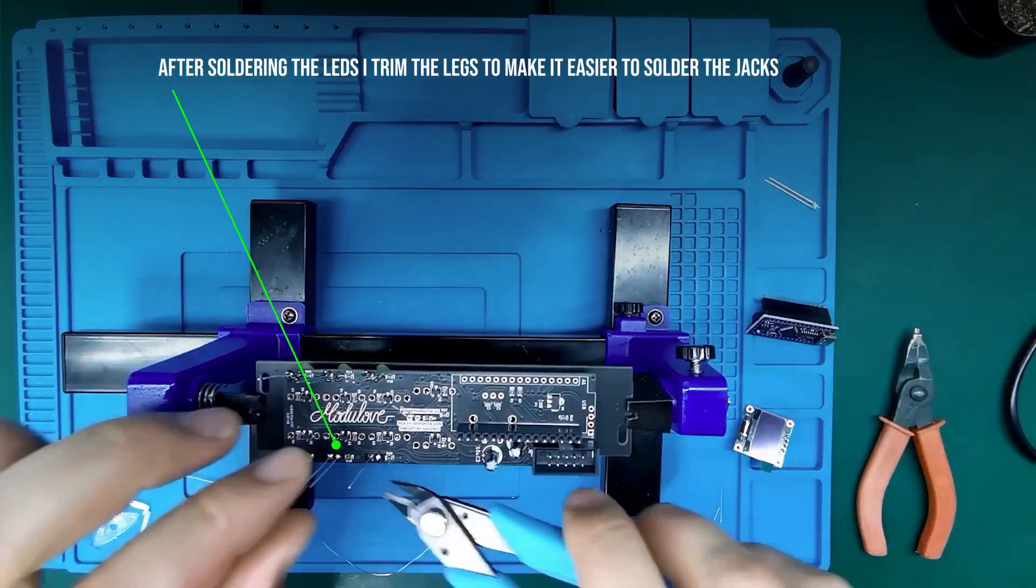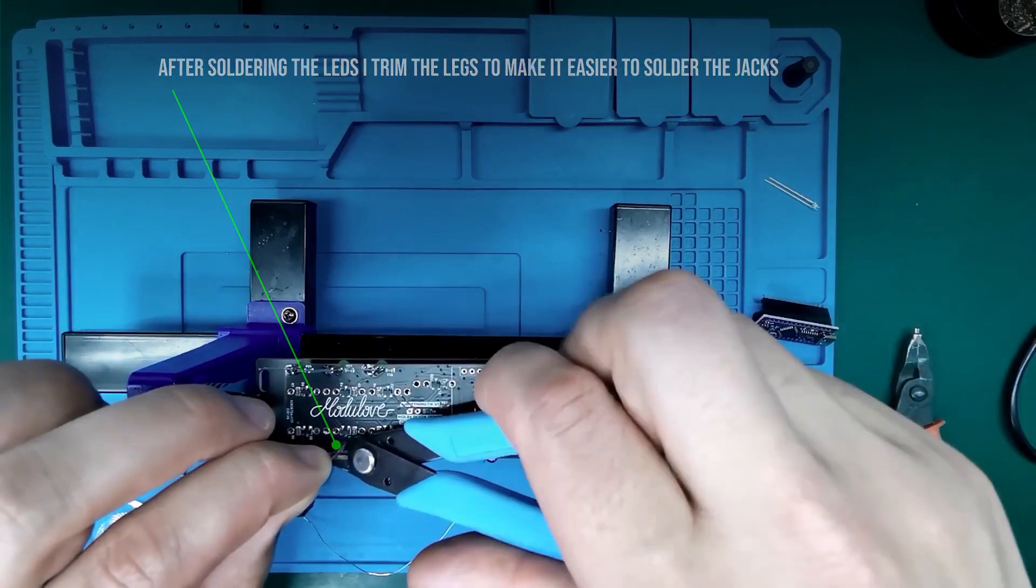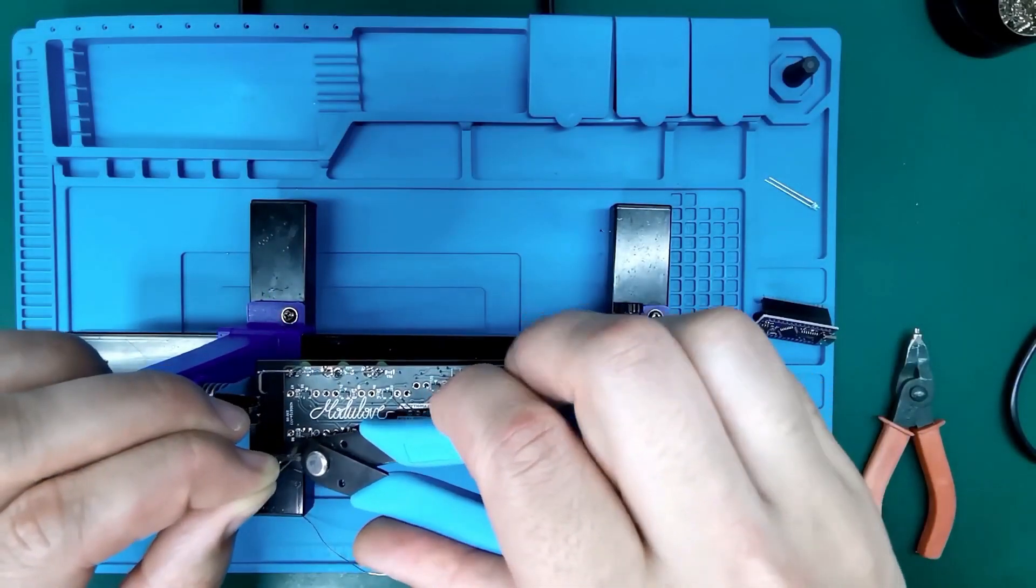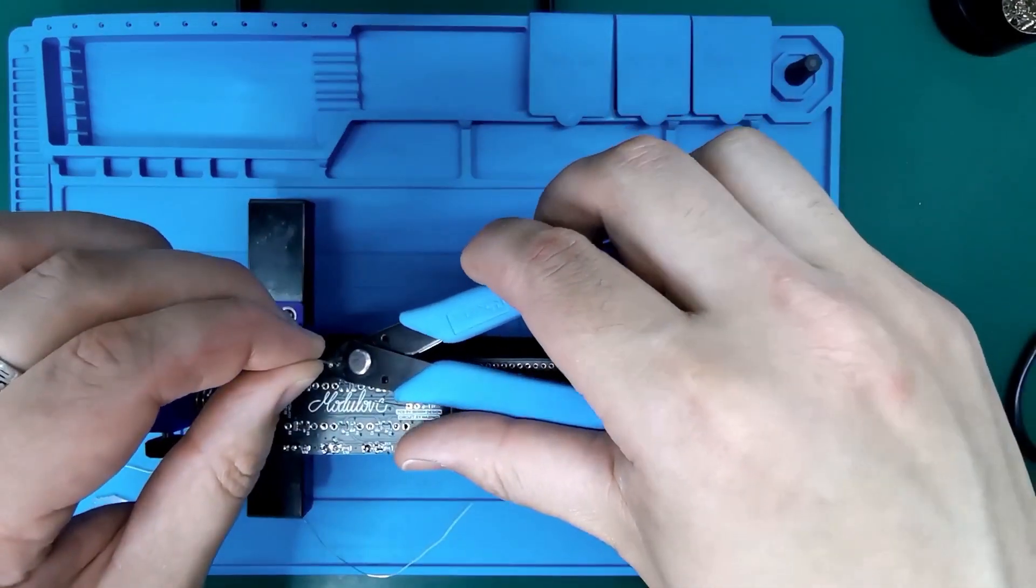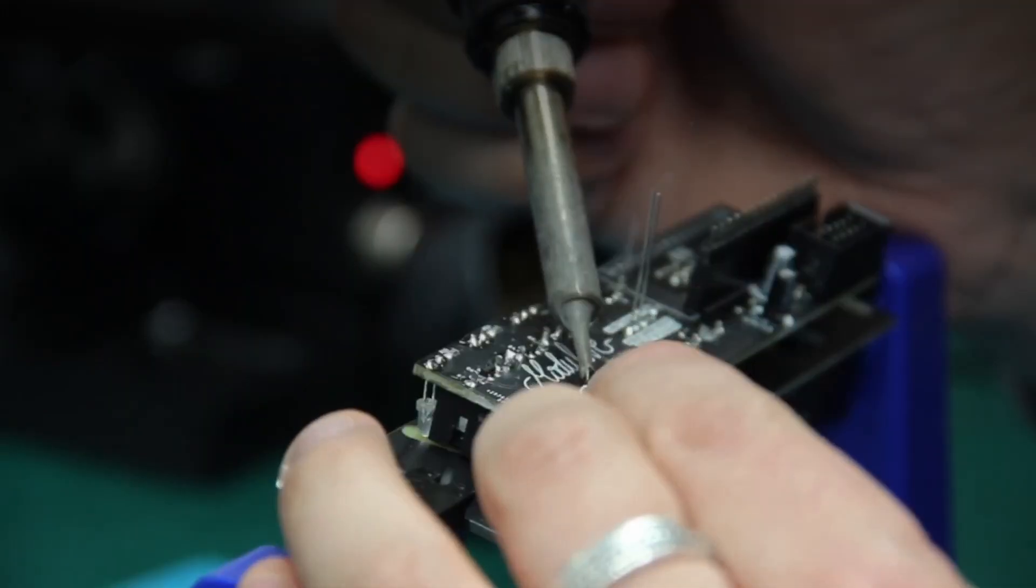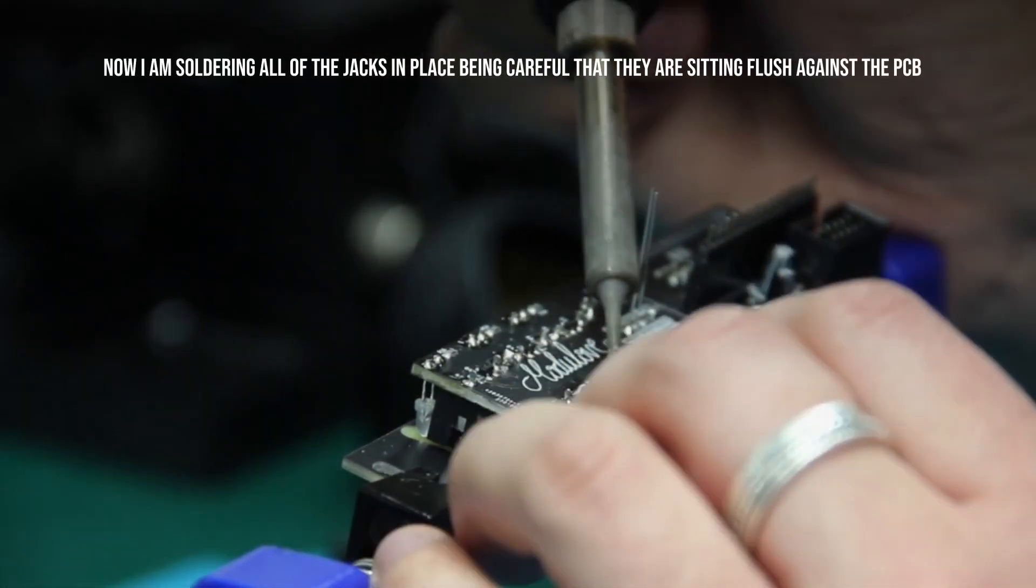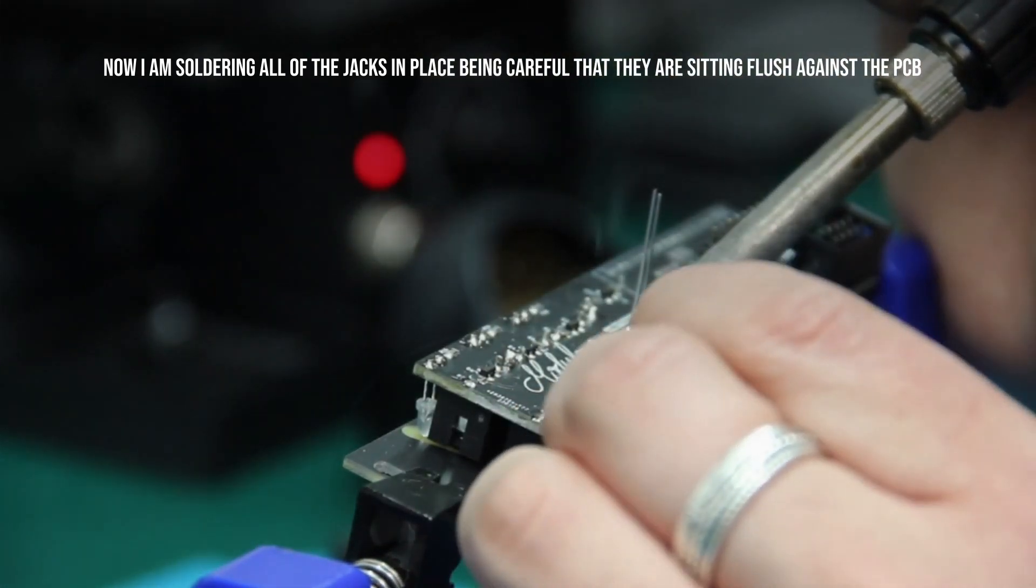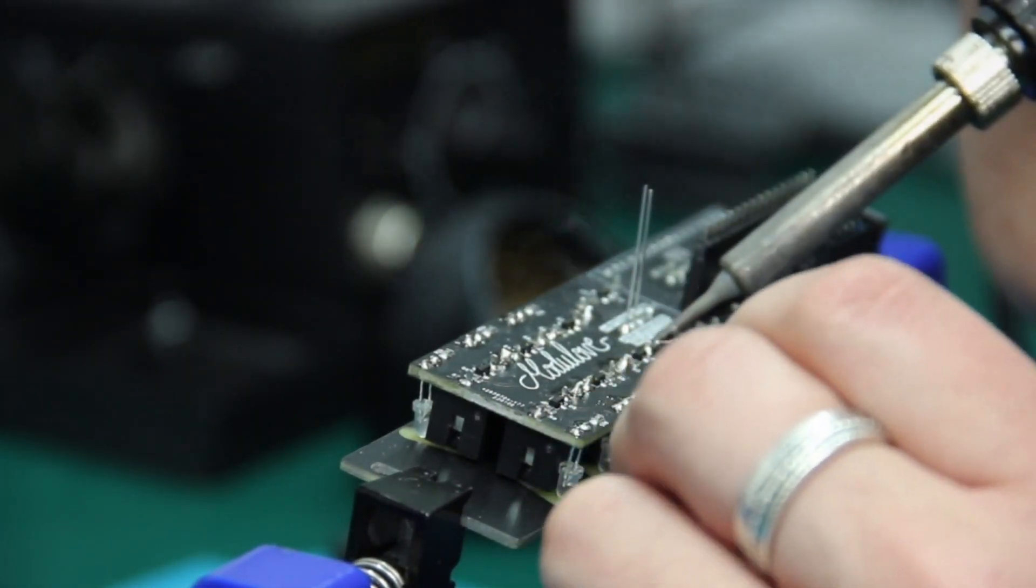I will trim the legs to make it easier to solder with the jacks. Now I will continue by soldering all of the jacks in place, being careful that they are sitting flush against the PCB.